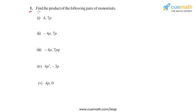In question 1, we have to find the product in each part of the given pair of monomials. So let's start with the first part. In the first part, we have the monomials 4 and 7p, which we have to multiply. So we have to calculate 4 into 7p.